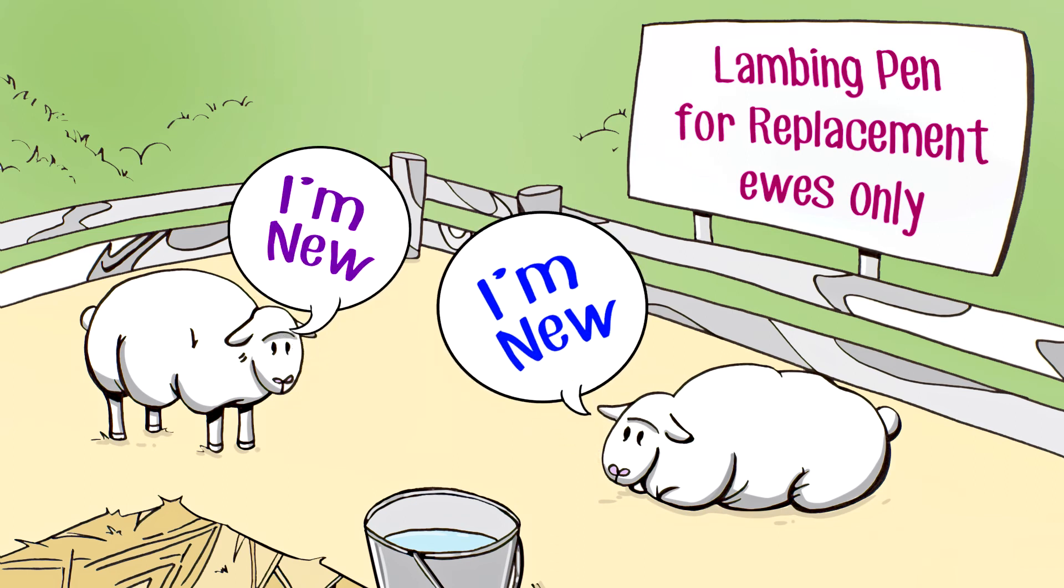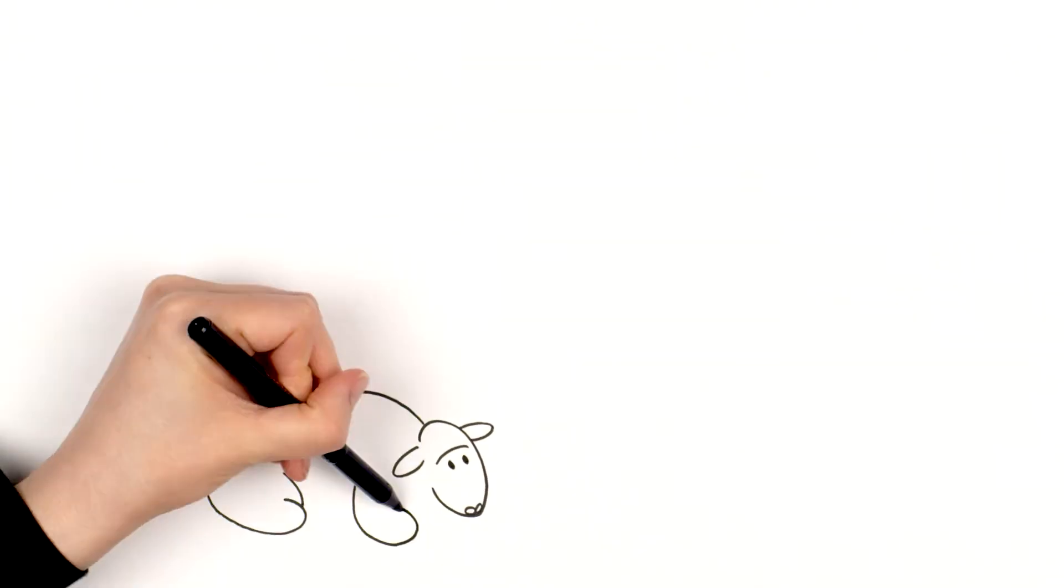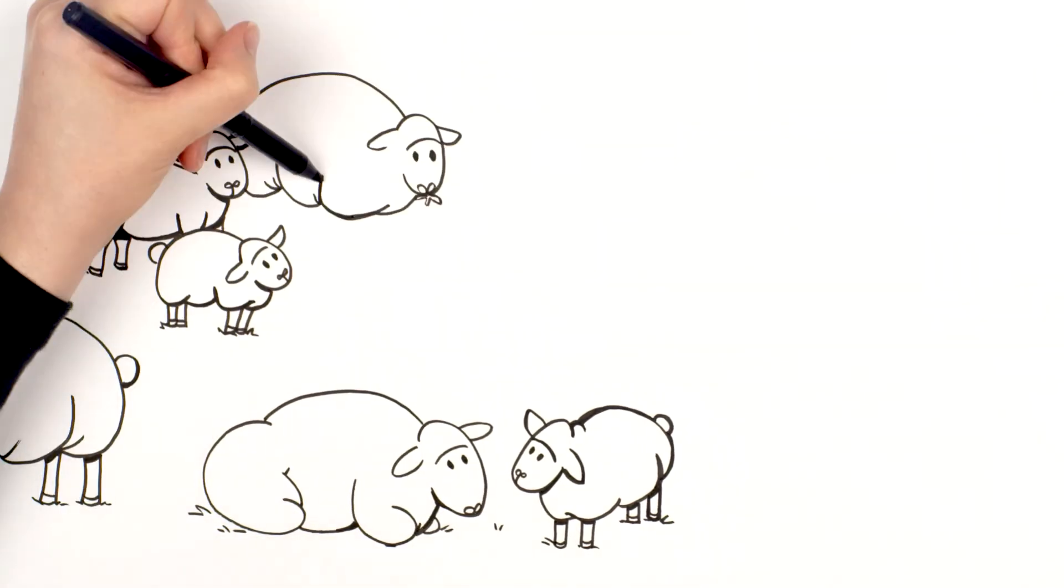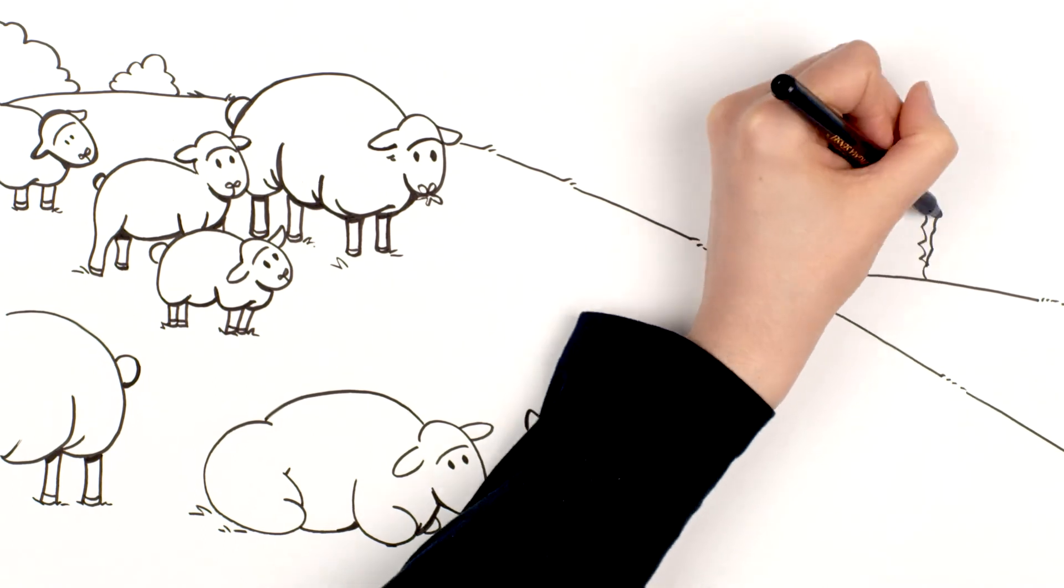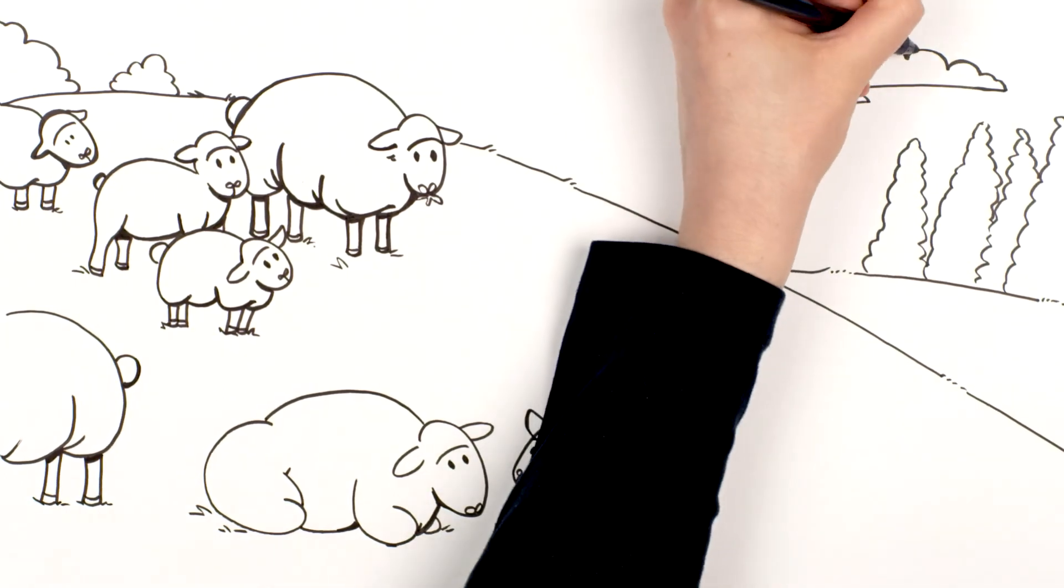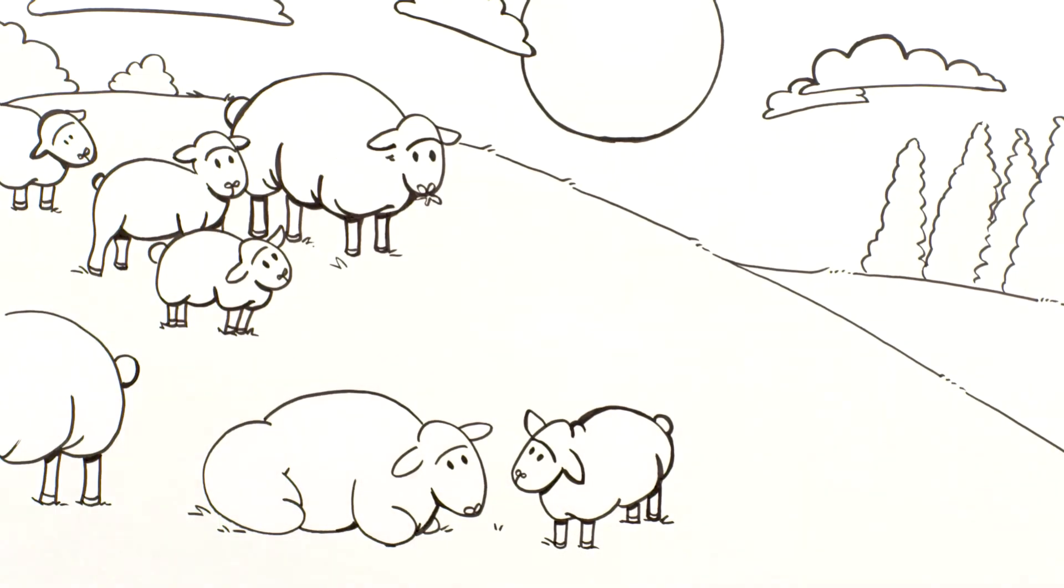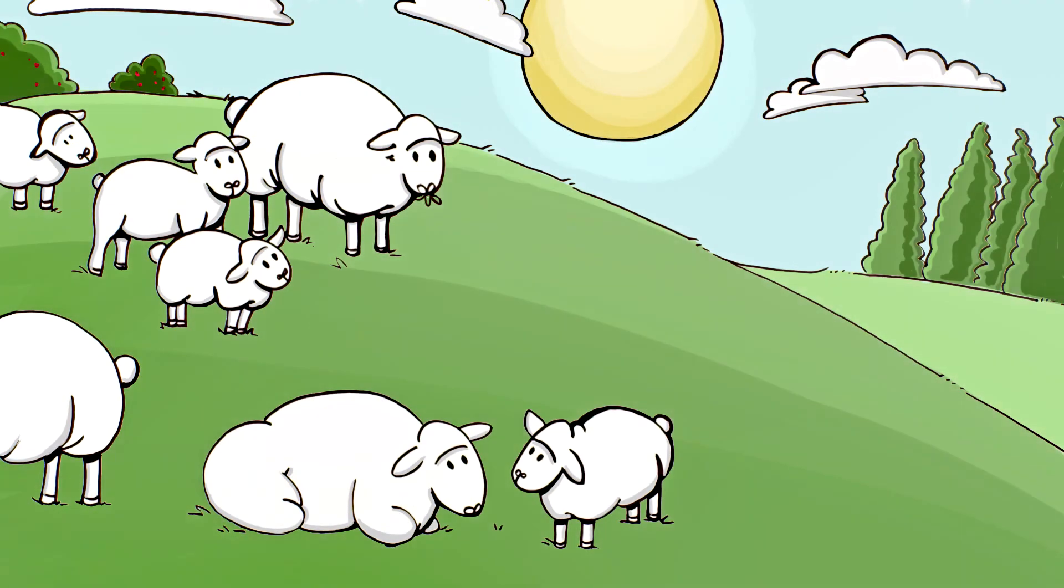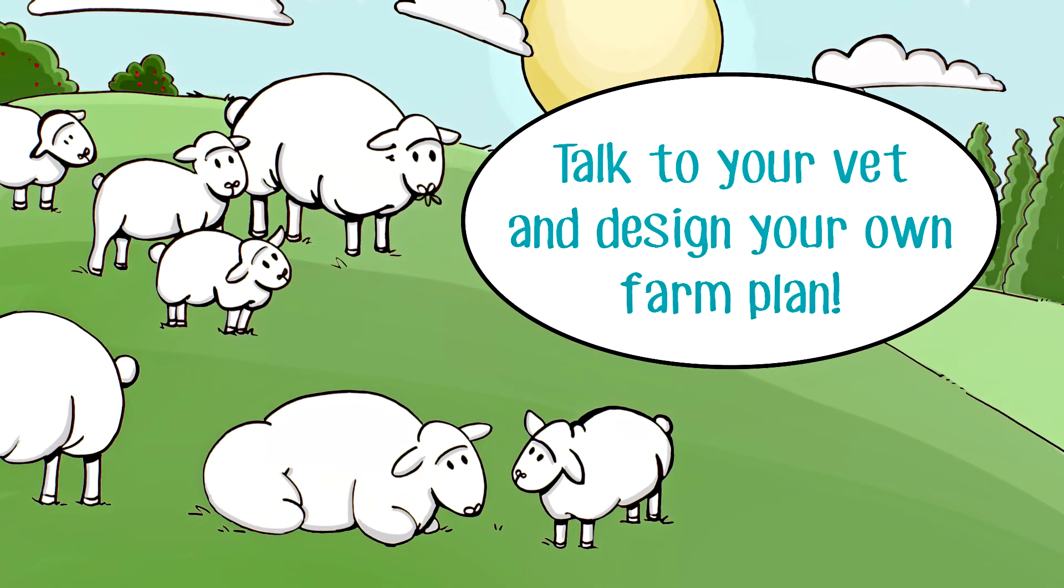I've also started lambing my first-timers separately from the rest of the flock. This is what I did on my farm, and things are working out much better for me this season. My abortion rate is only about 1% now, which I'm told is pretty normal. For you, I'd say talk to your vet and work out ways to deal with abortions on your farm. You'll see prevention and control is all about reducing the spread of abortion-causing bugs through good management and a solid action plan.